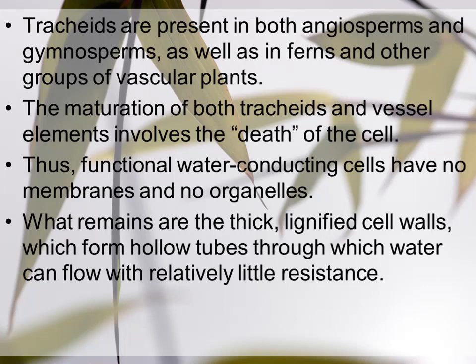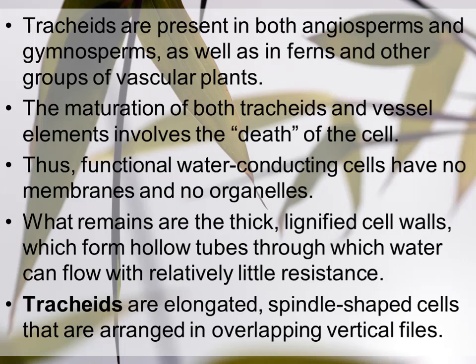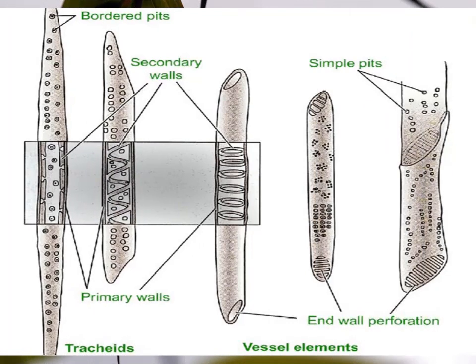Tracheids are elongated, spindle-shaped cells arranged in overlapping vertical files. They have only lignified cell walls with small pores called pits through which water movement occurs. This lignification occurs in various patterns — circular or in strips at different places on the cell wall.